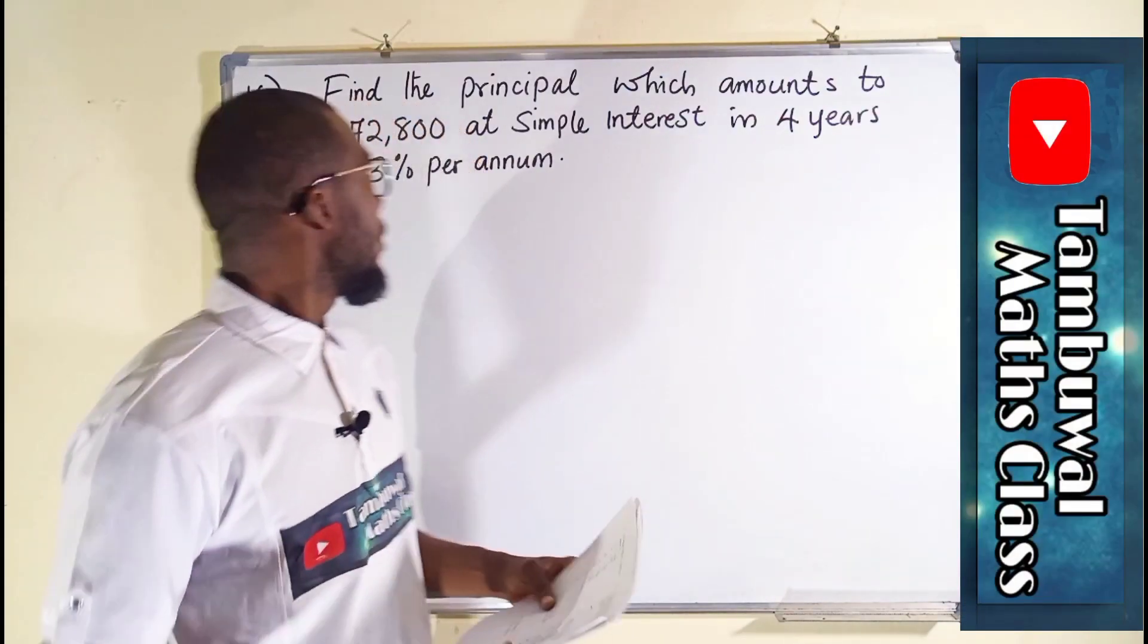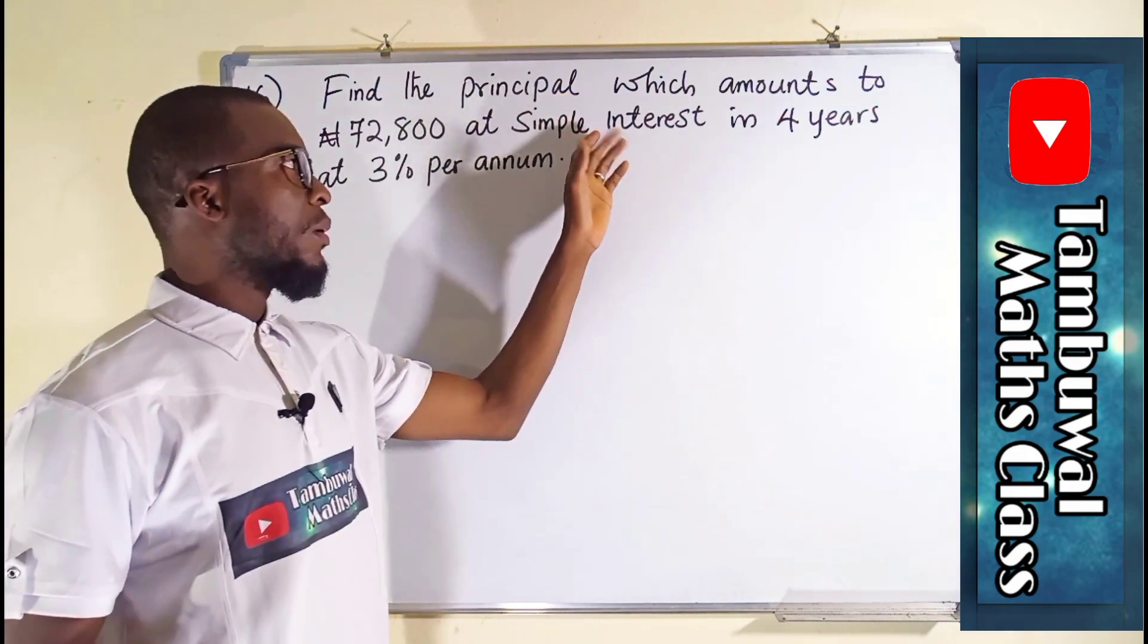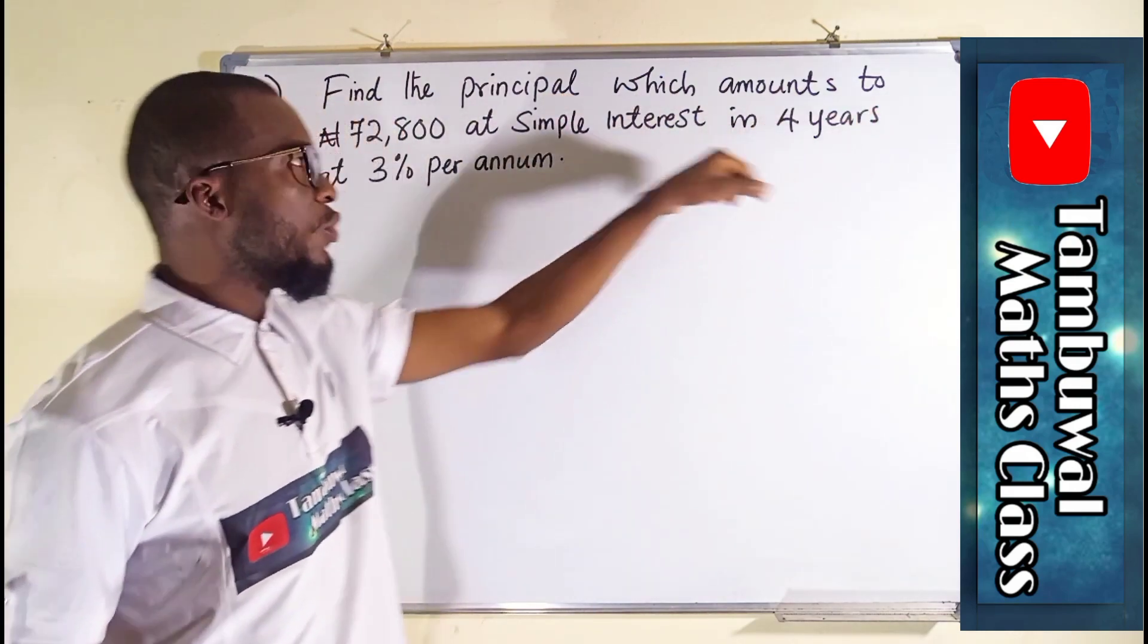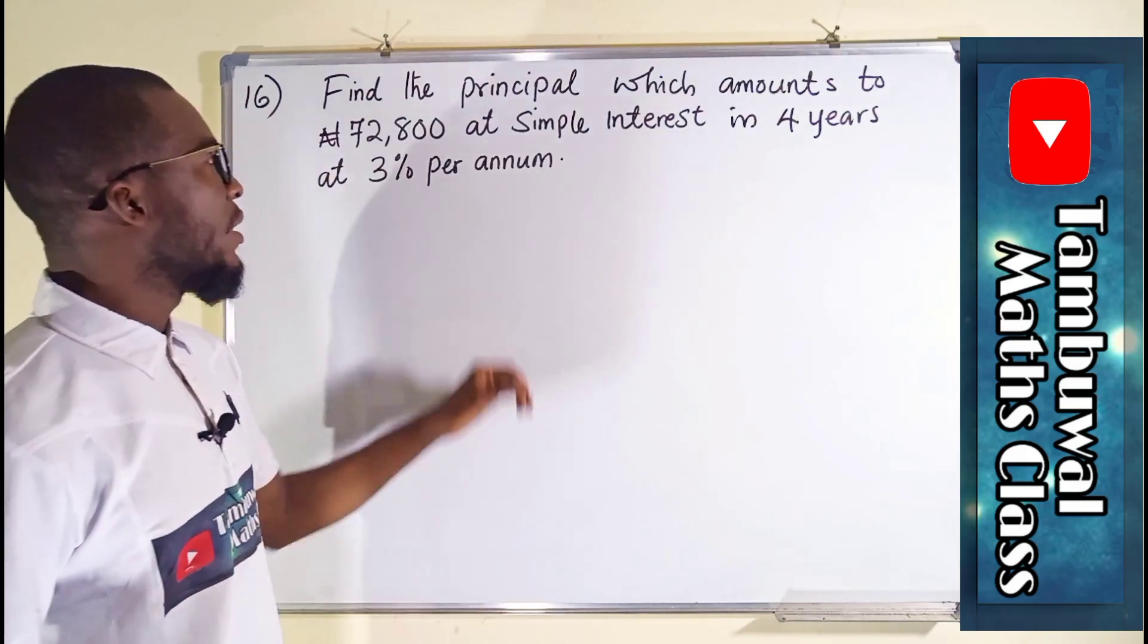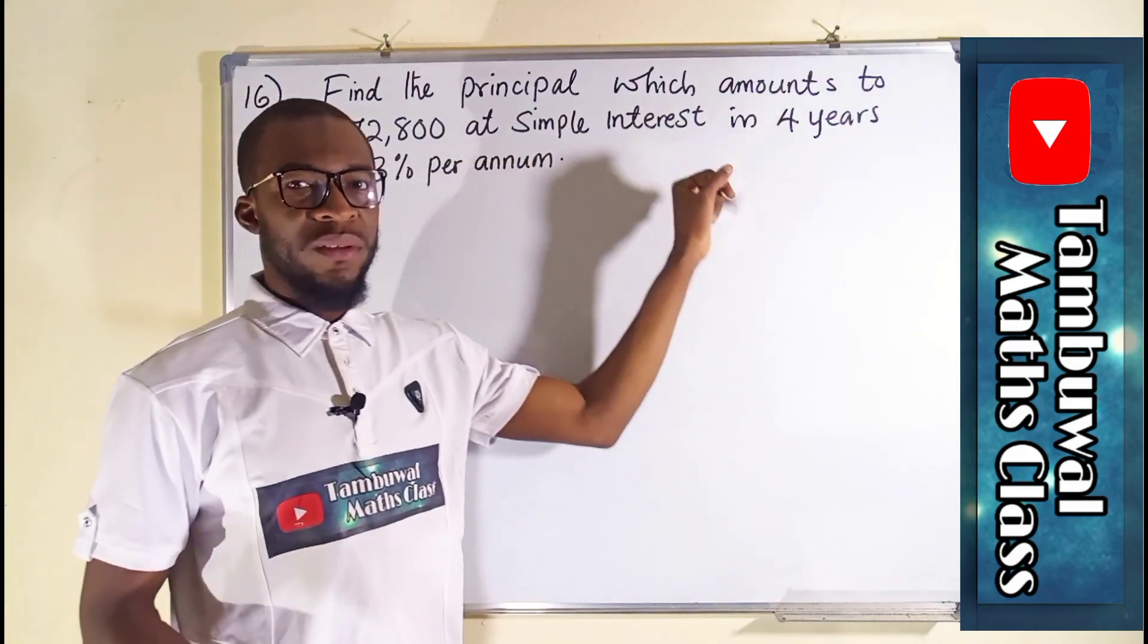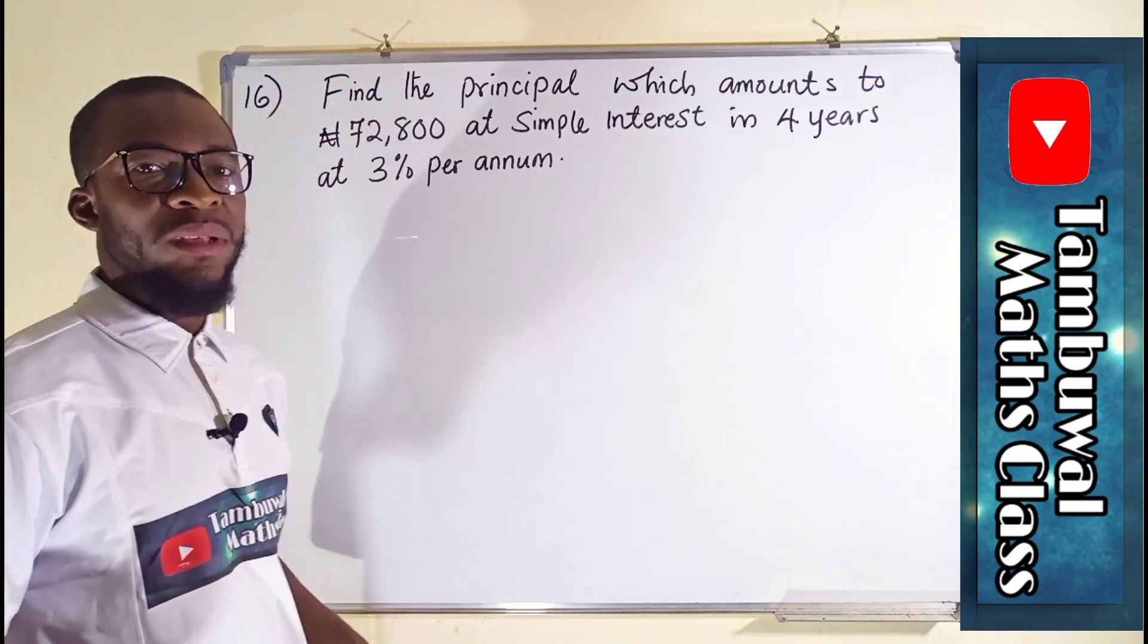Question number 16. It says we should find the principal which amounts to 72,800 Naira at simple interest in four years at the rate of 3% per annum.